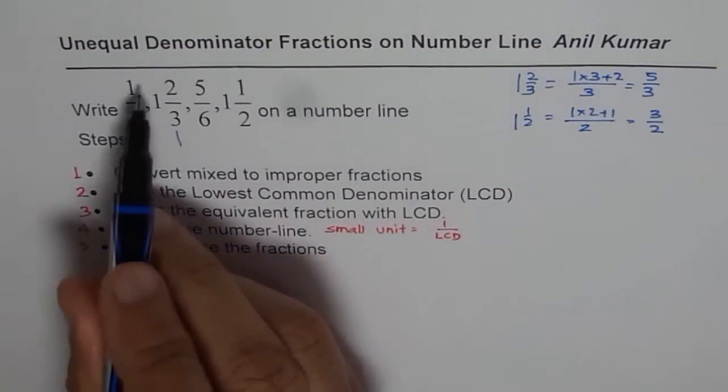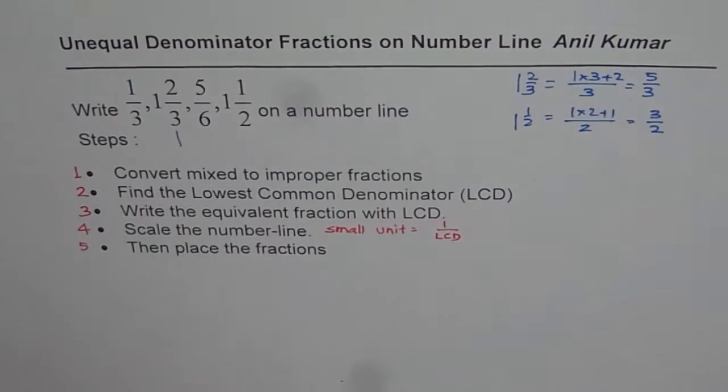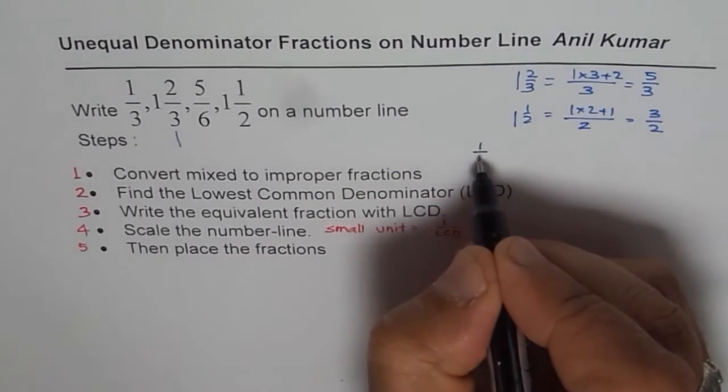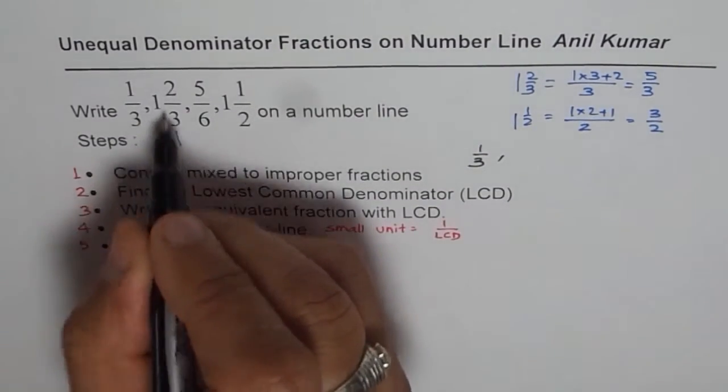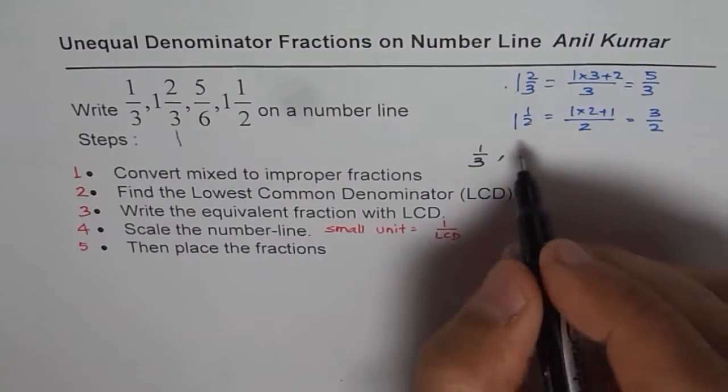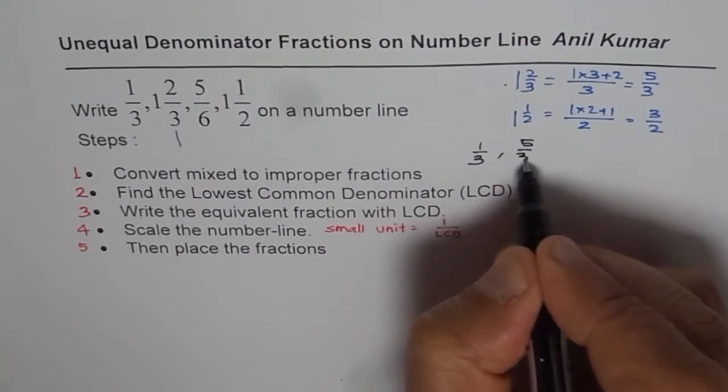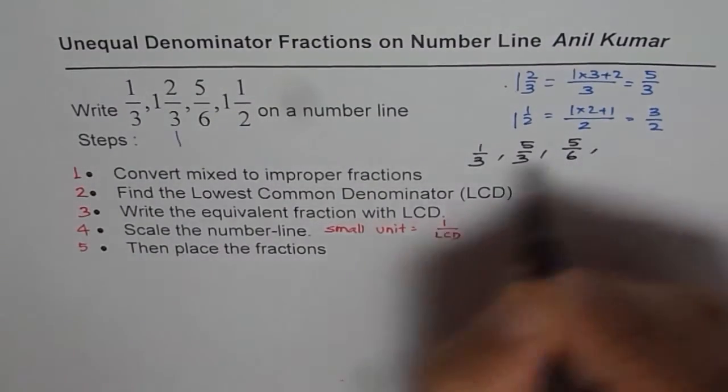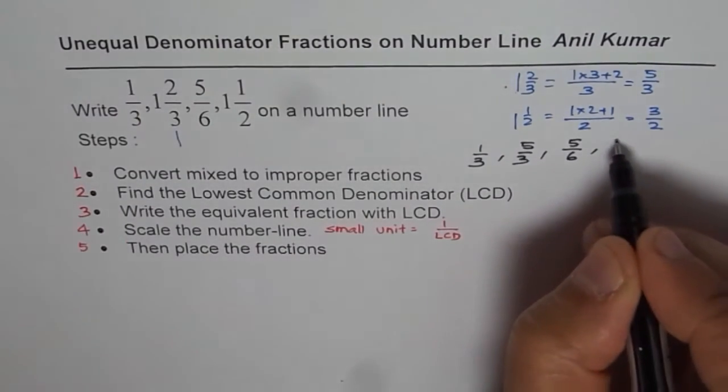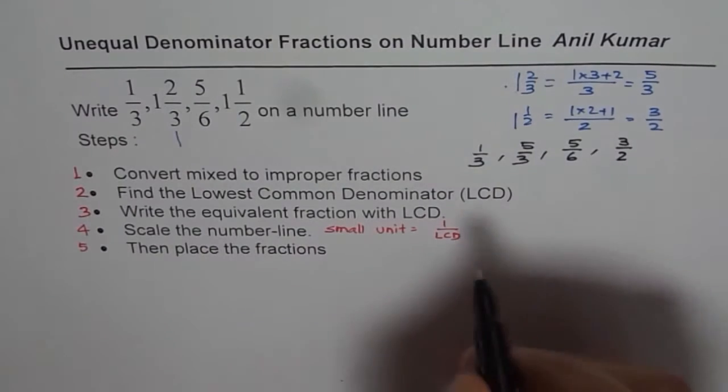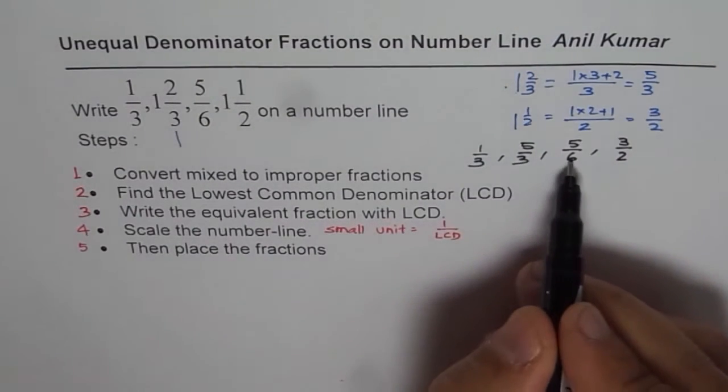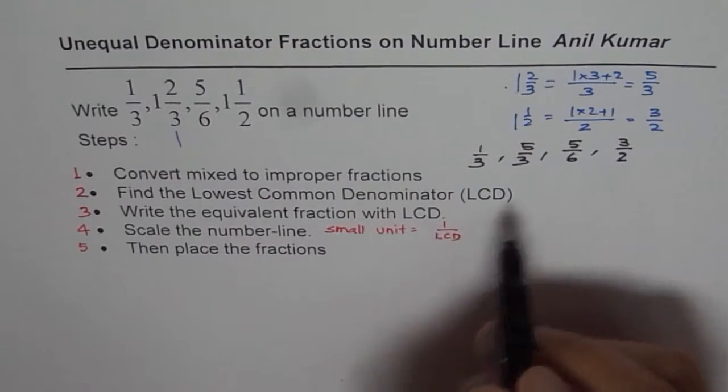So let us write them after converting to improper fractions. First one is 1 over 3, let us keep it as such. The second one, 1 and 2 over 3, is written as 5 over 3. The third one, 5 over 6. And the fourth one, 1 and a half, can be written as 3 over 2. So these are also equivalent fractions. But what you notice here is that the denominator is different for them.